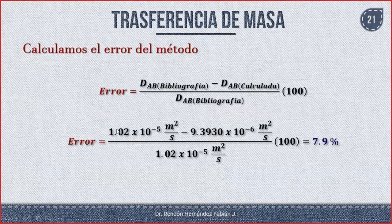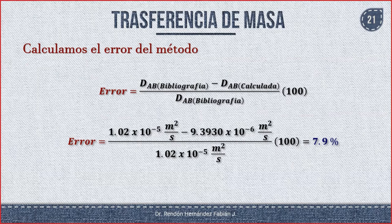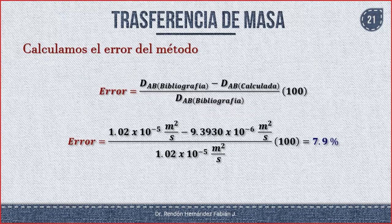La bibliografía era 1.02×10⁻⁵ m²/s y el calculado fue 9.3930×10⁻⁶ m²/s. Fíjate que este está por 10⁻⁵ y este por 10⁻⁶, lo que significa que el calculado es más pequeño. Para este modelo tenemos un error de 7.9%, prácticamente el 8%. El error tiene mucho que ver con los materiales: si es muy polar, el error es más grande; si es menos polar, el error es más pequeño.